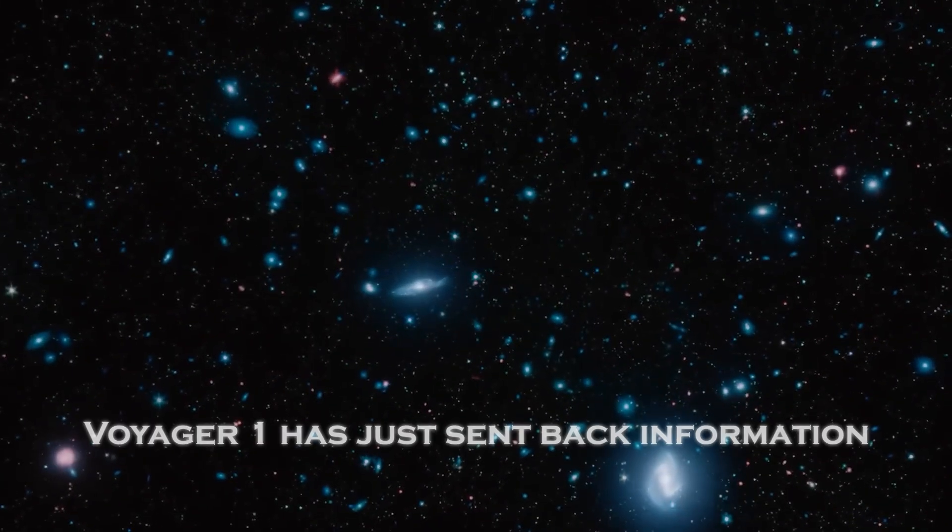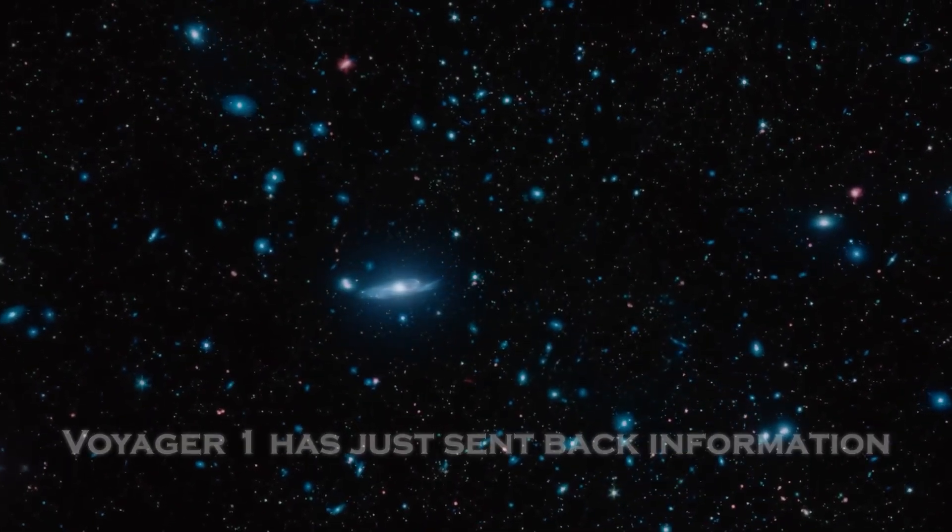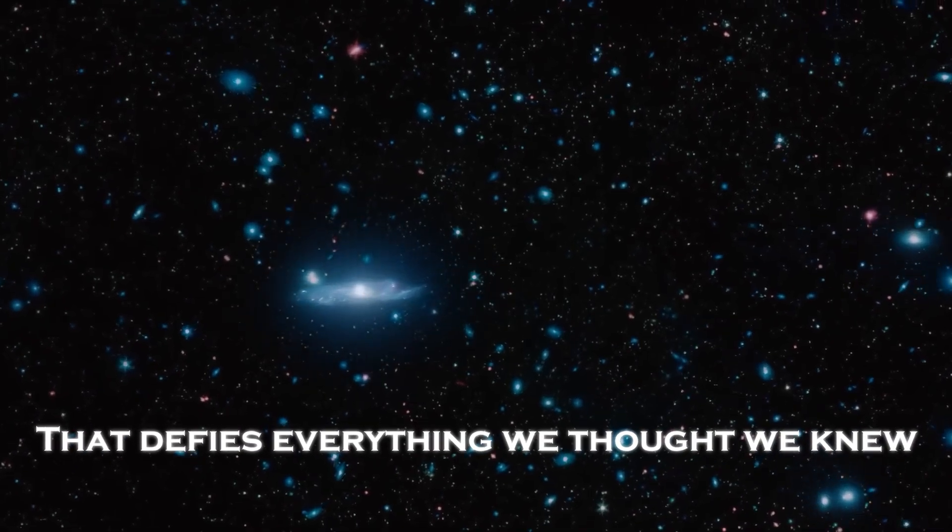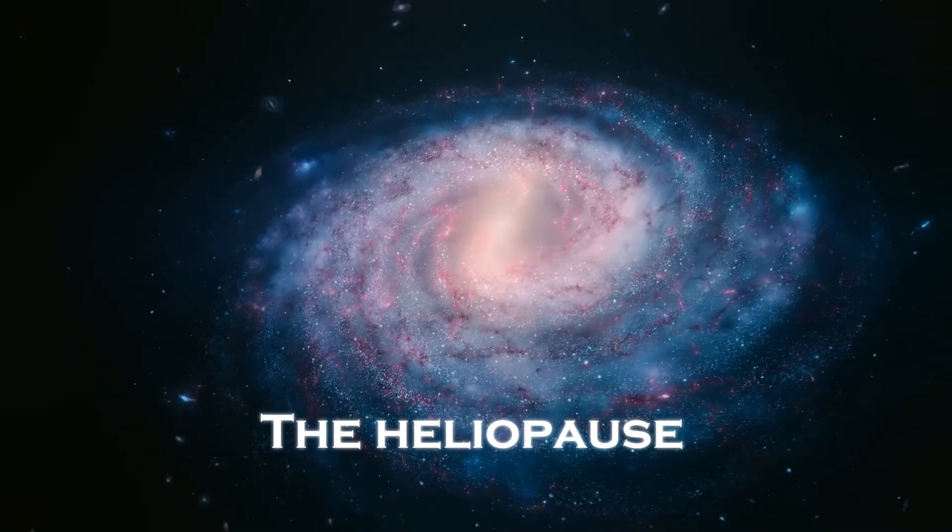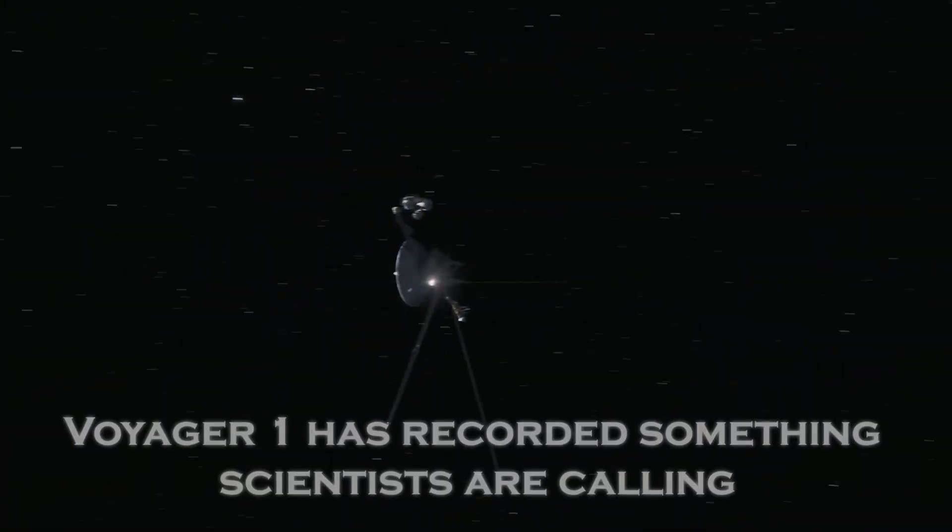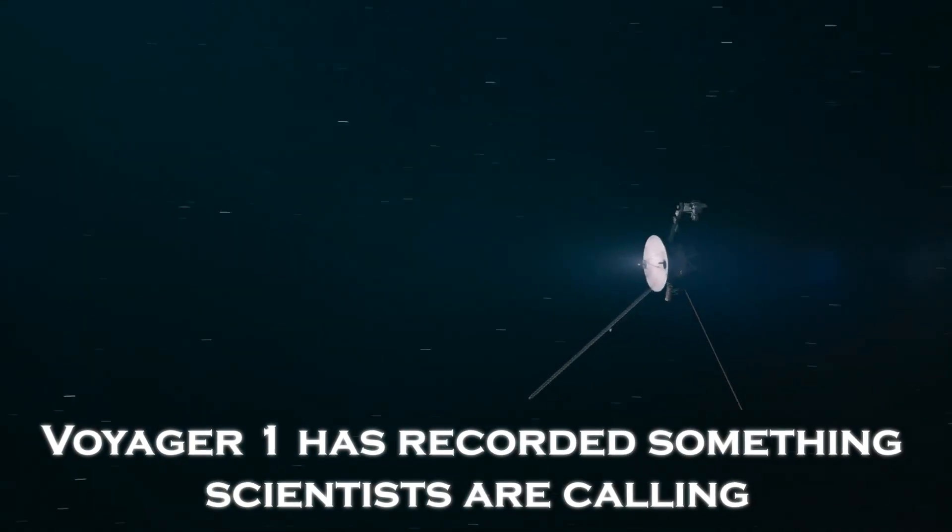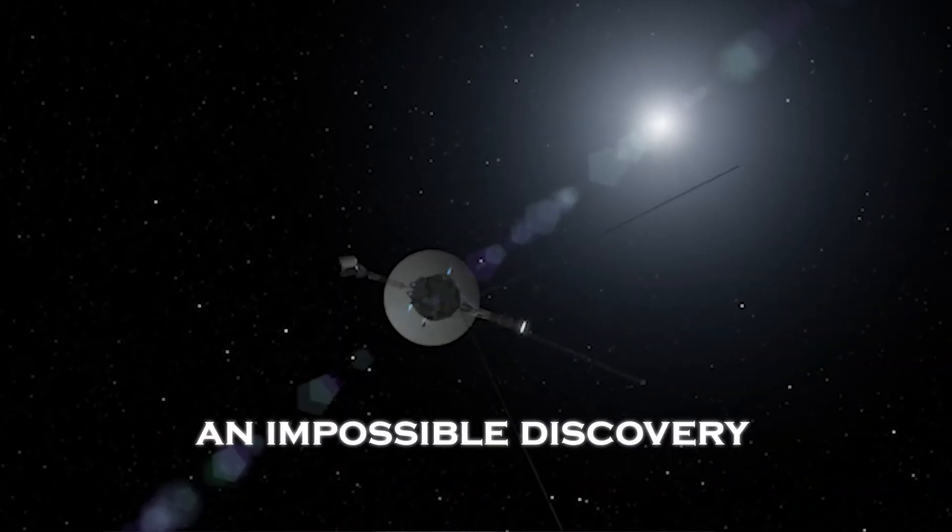But today, Voyager 1 has just sent back information that defies everything we thought we knew. At the edge of our solar system, in an area known as the Heliopause, Voyager 1 has recorded something scientists are calling an impossible discovery.